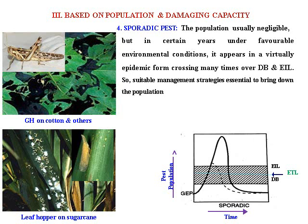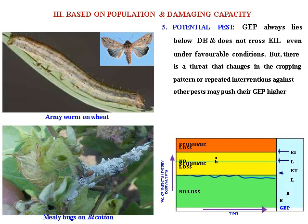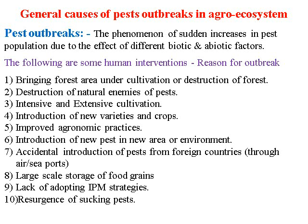For example, grasshopper on potato and other crops, and leaf hoppers on sugarcane with sugarcane pests. Based on population damage and capacity, potential pest: the general equilibrium position lies below the damage boundary and does not cross the EIL even under favorable conditions. But there is a threat that a change in cropping pattern or repeated interventions against other pests may push their general equilibrium higher. An example is army worm on certain crops. There are also general causes of pest outbreaks in the ecosystem.